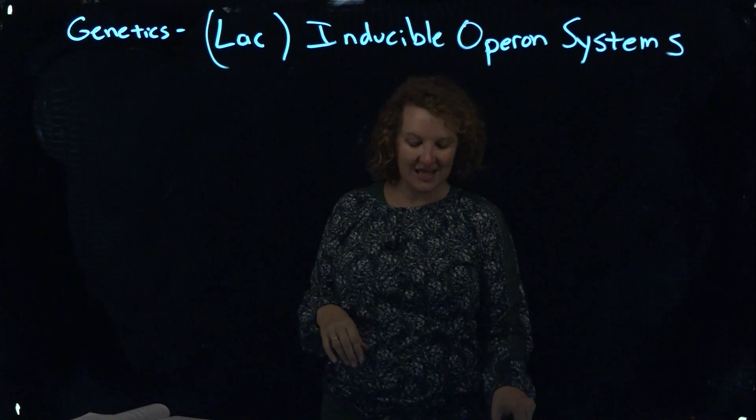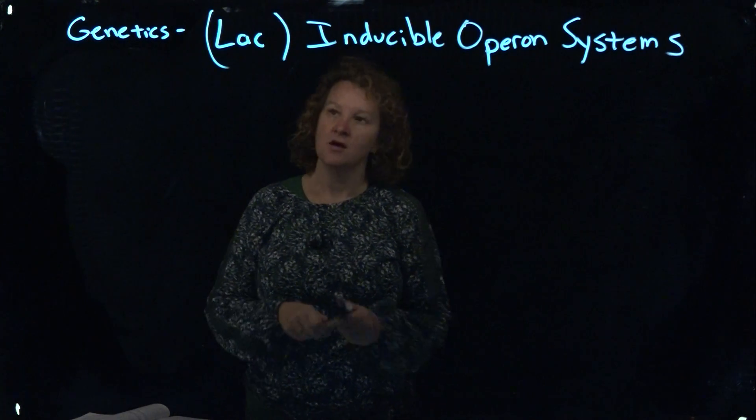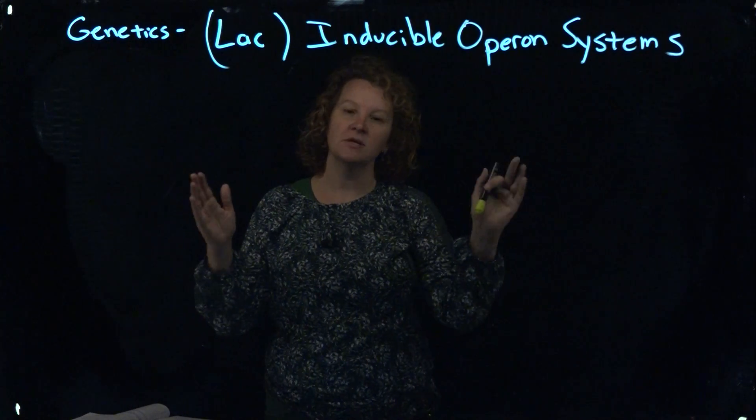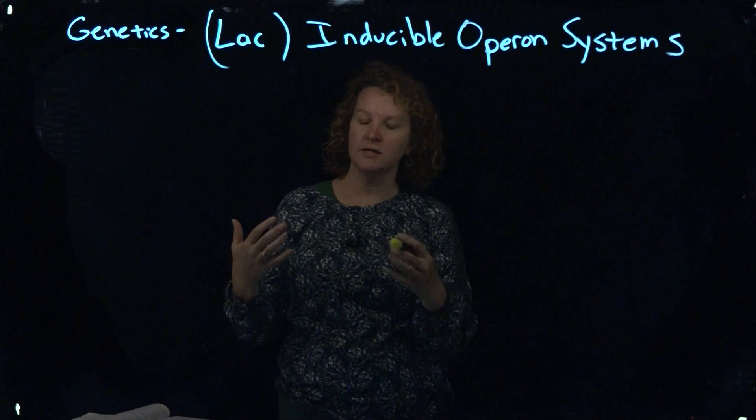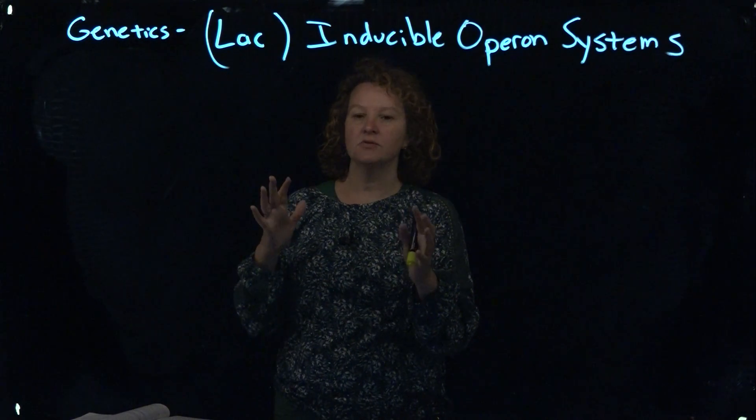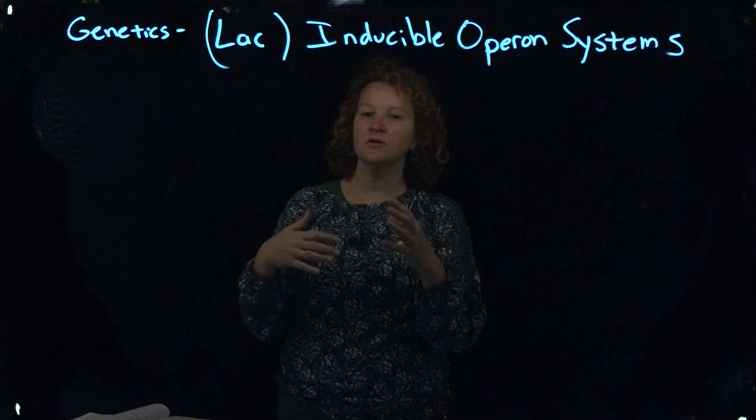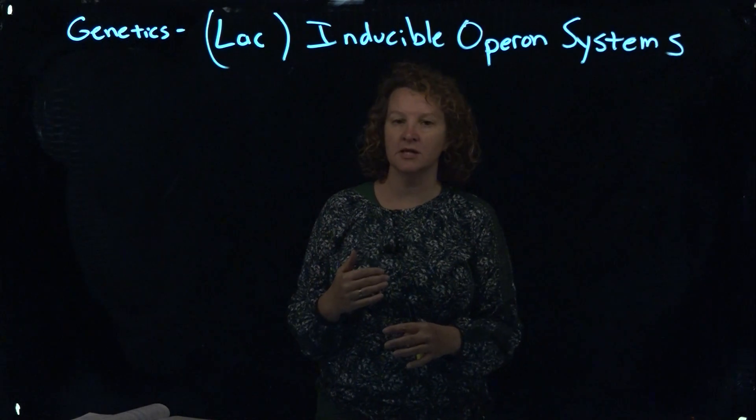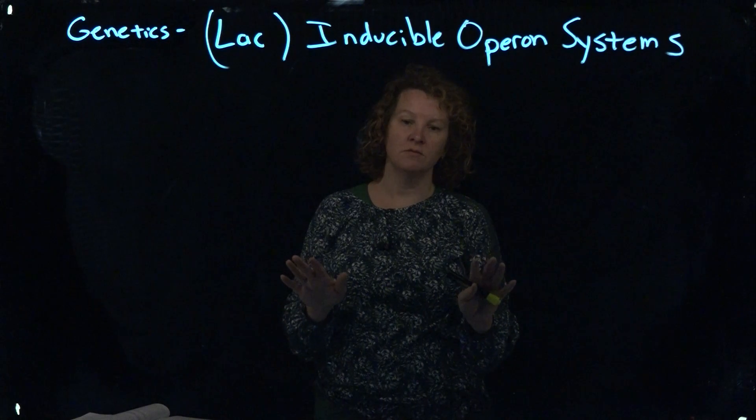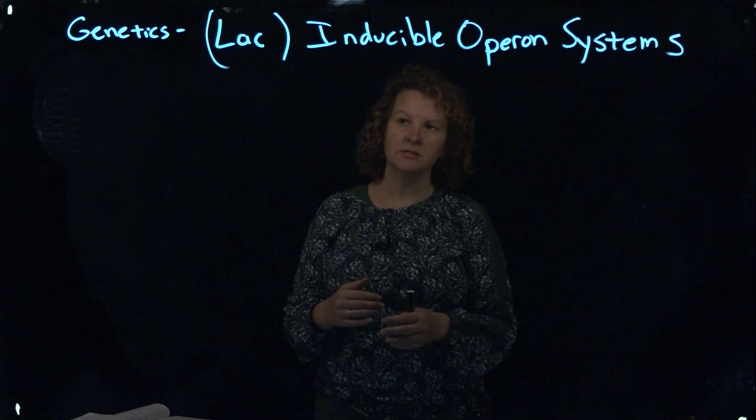The classic example that's used is the lac operon system. So if we look at a segment of DNA, we can locate where the genes are, but there's a control mechanism in bacteria that precedes that, that triggers the enzymes in the cell that, yes, we want to transcribe and translate this particular protein, or no, we're going to keep it shut down, we don't need it right now.